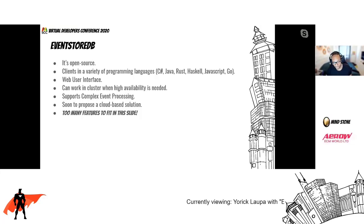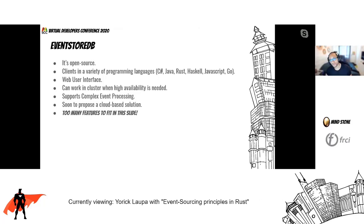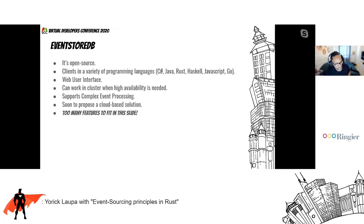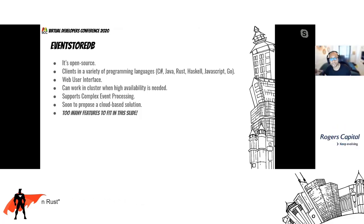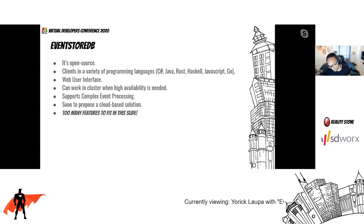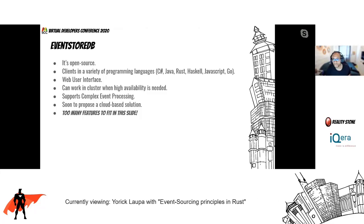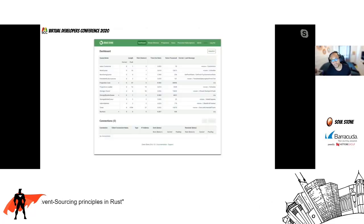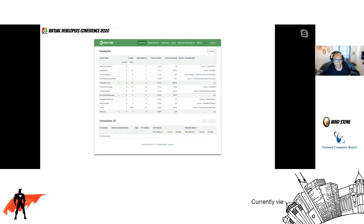EventStoreDB provides many advantages. First, it's a very active open source project. It also provides professional support services. It can work in a cluster if you have high availability requirements. It can be accessed through many different programming languages — for example, C#, Java, Rust, Haskell, and very soon JavaScript and Go. Also, in the very near future, EventStoreDB will release a multi-cloud software-as-a-service solution, which currently supports both AWS and GCP, and later will also support Azure.